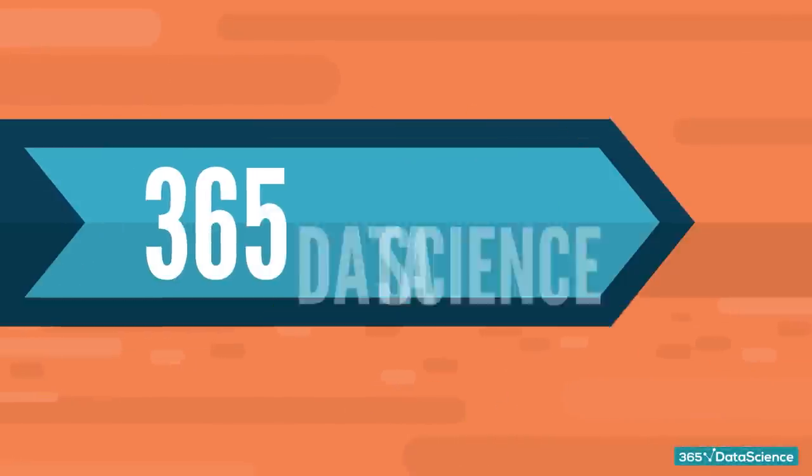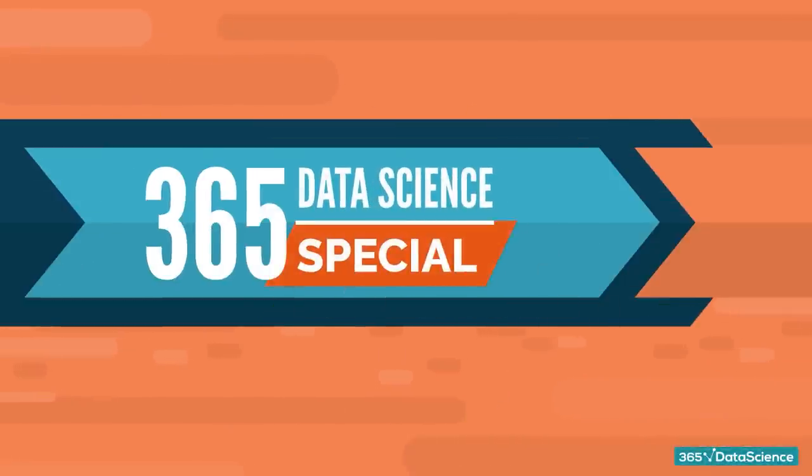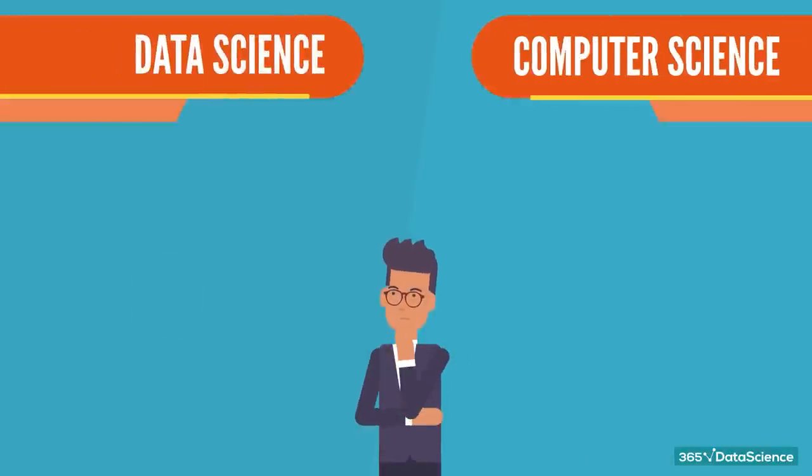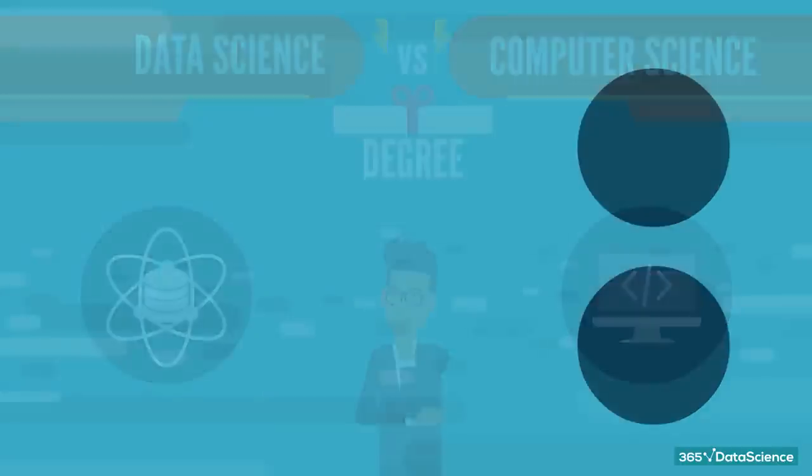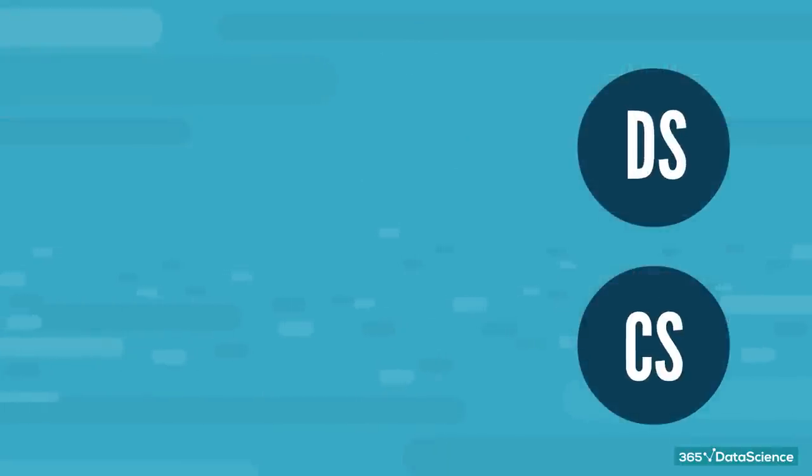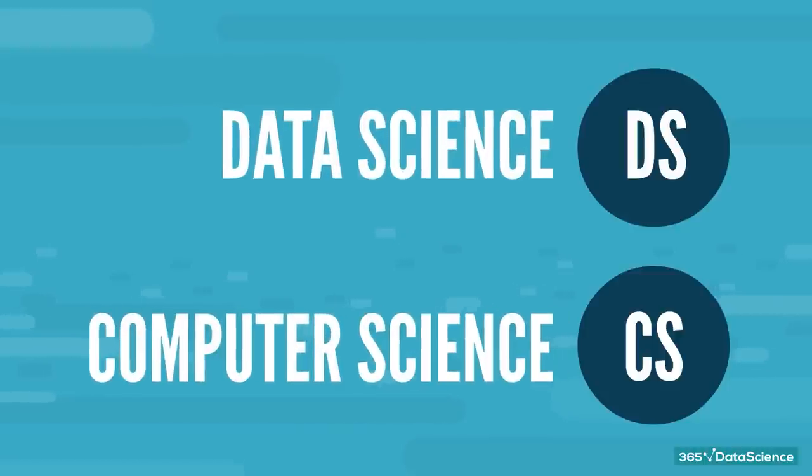Hello, and welcome to this 365 Data Science Special, where we'll discuss which is the optimal choice for an aspiring data scientist: a data science or a computer science degree. Before we begin, we want to say that throughout this video, we'll be using the abbreviations DS and CS to indicate data science and computer science, respectively.